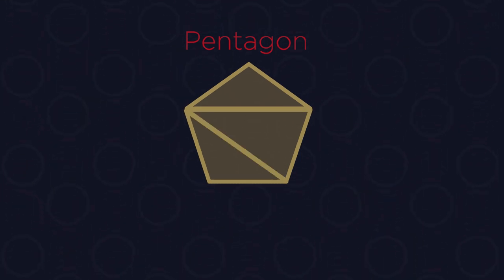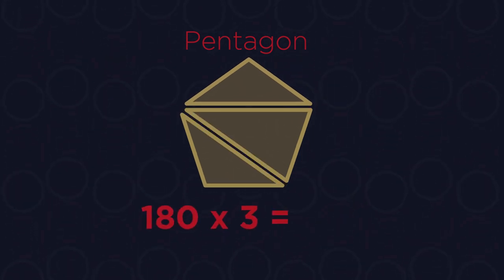All pentagons split into three triangles. So 3 times 180 means they have 540 degrees.